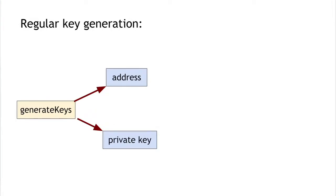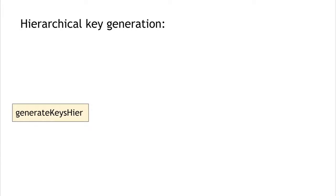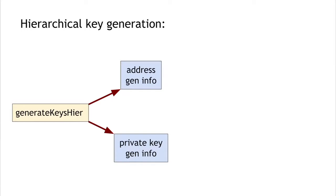To review: when we talked about digital signatures back in Lecture 1, we talked about an API operation called 'generate keys,' which generates a public key and a secret key. The public key corresponds to the Bitcoin address that can receive coins; the private key allows us to spend or control those coins. With hierarchical key generation, we do things differently — rather than just doing 'generate keys,' we do a hierarchical key generation operation, which generates 'address generation info' and 'private key generation info,' from which we can generate multiple keys.